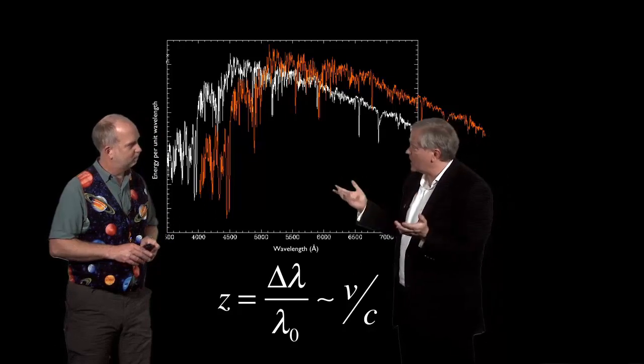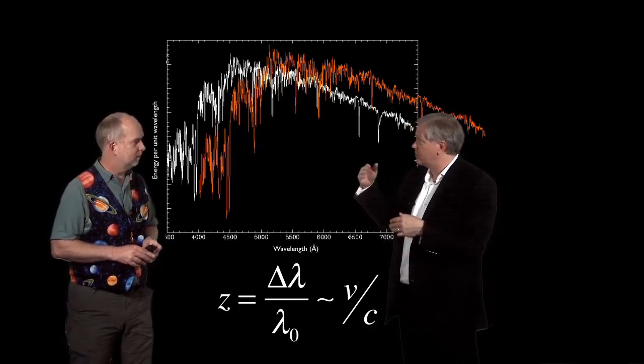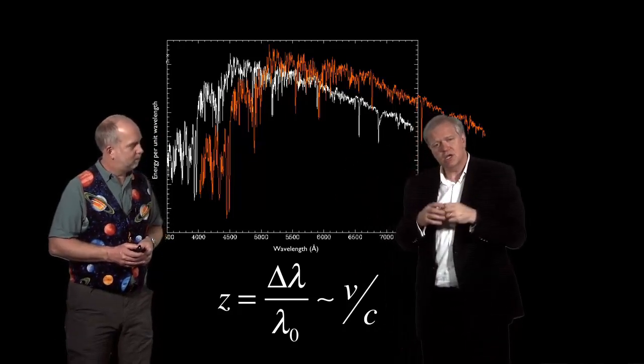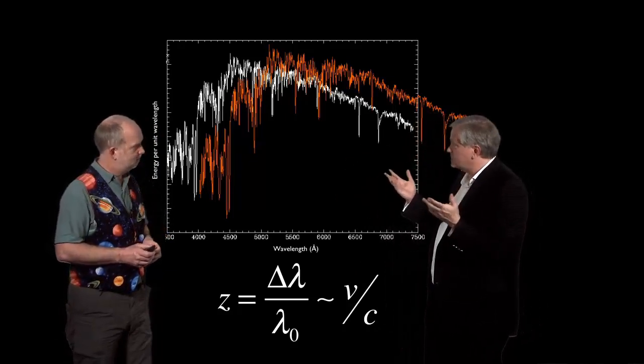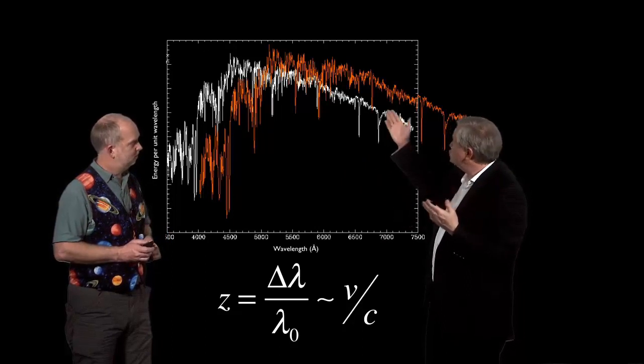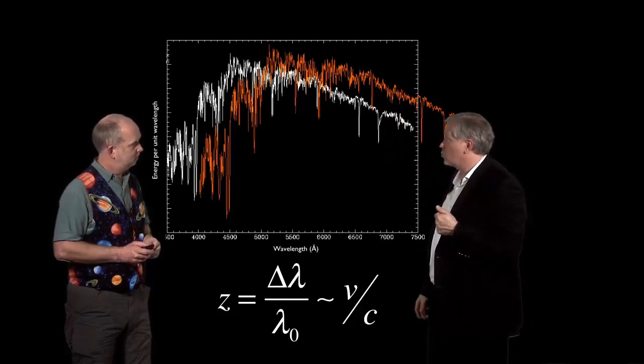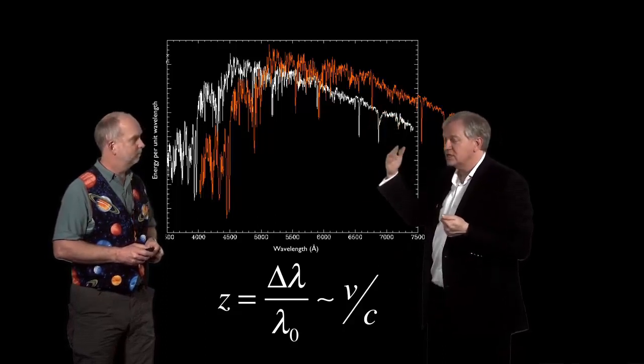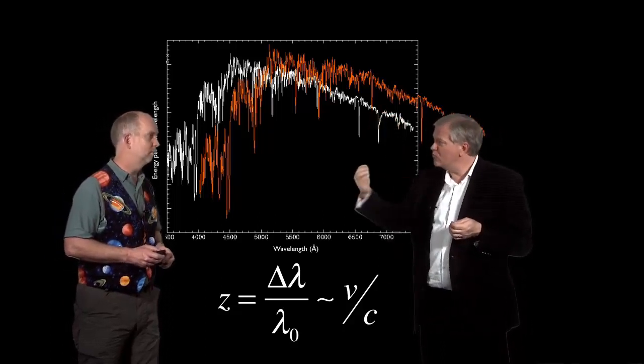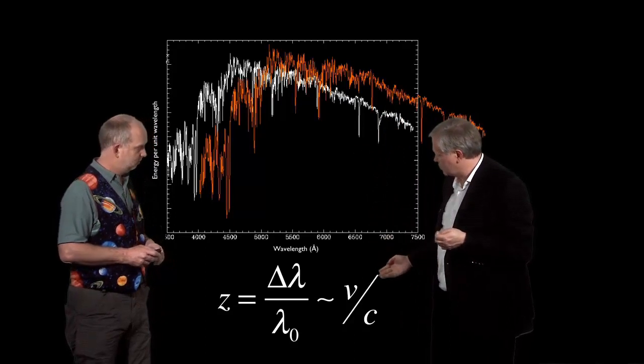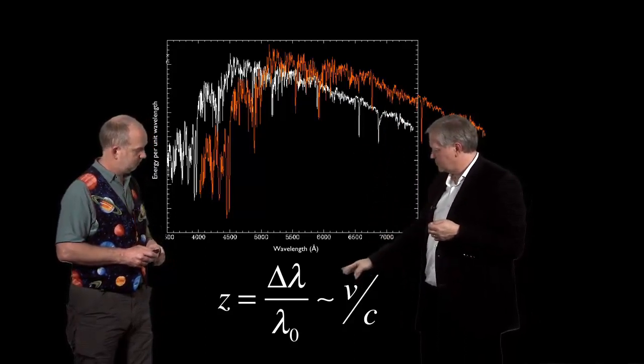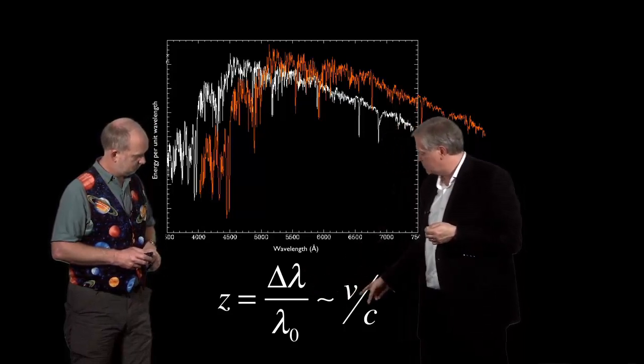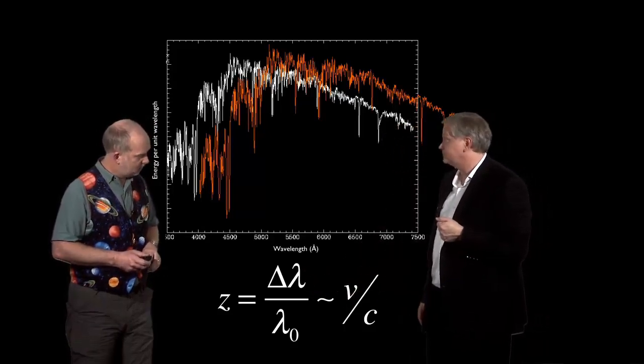Well, we know that waves get shifted by the Doppler shift, so we hear that in sound. When a police car goes by you, the sound waves get shifted and compressed and stretched and the pitch changes. Light's a wave, so that same effect's going to happen. So one can use the redshift to measure velocity. So when we see a redshift, it's like the objects are moving away from us.